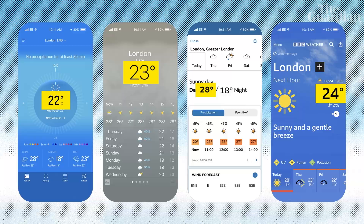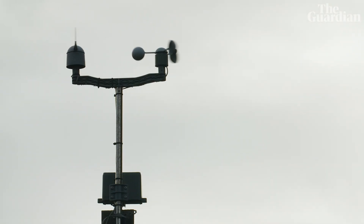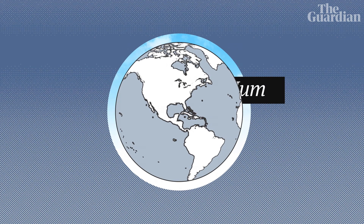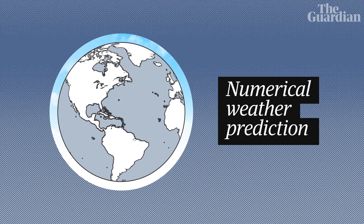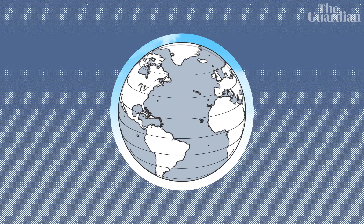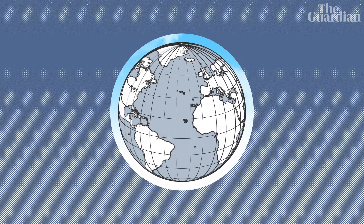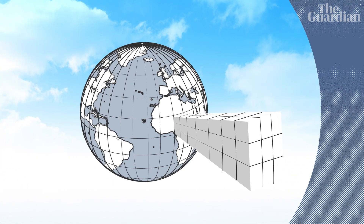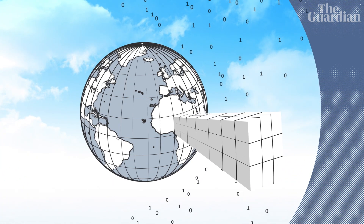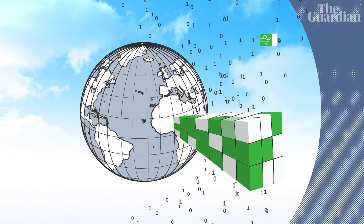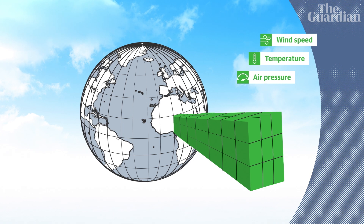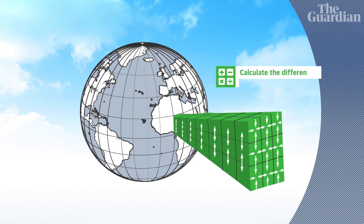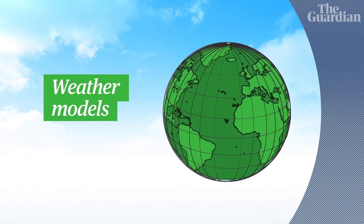In order to answer this question, we need to understand how weather prediction actually works. Today's weather forecasts are largely driven by powerful numerical weather prediction systems. Imagine the Earth is divided up into little boxes, stacked up in columns, from the land all the way up to the stratosphere. Meteorologists piece together huge amounts of data to work out what's going on in each box — think wind speed, temperature, air pressure and so on. Once they have numbers for each of these boxes, they can calculate the differences between them, and this is how meteorologists build weather models to predict what's going to happen in the future.